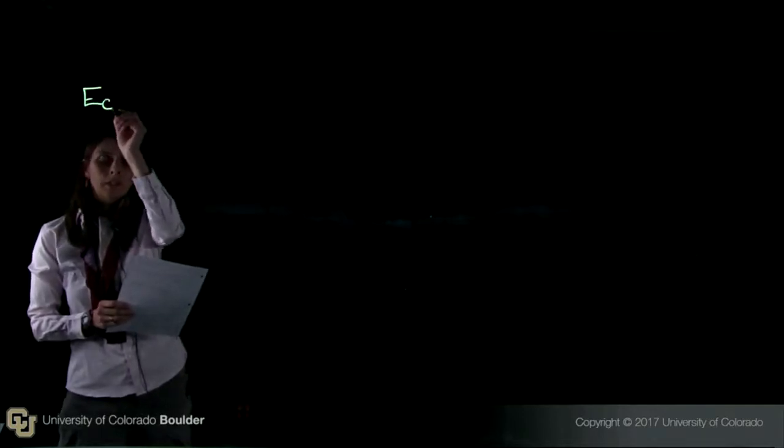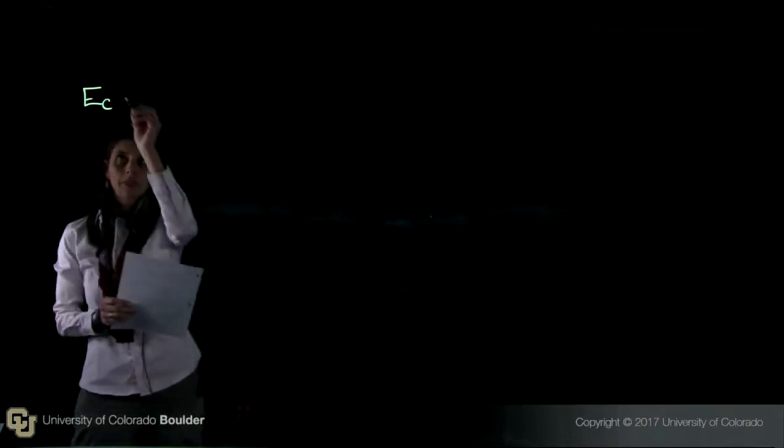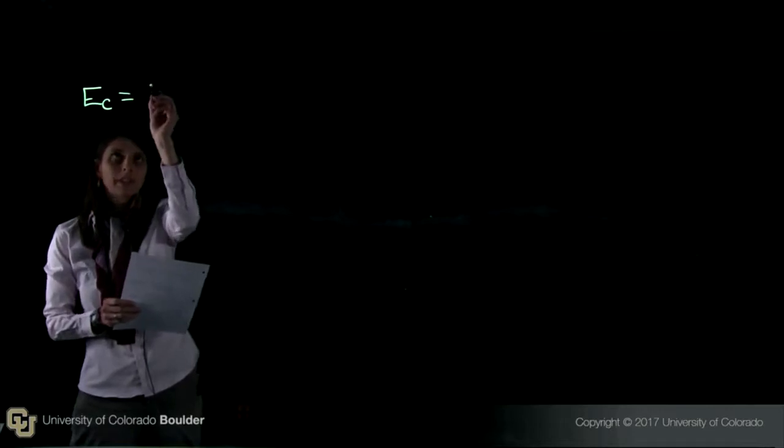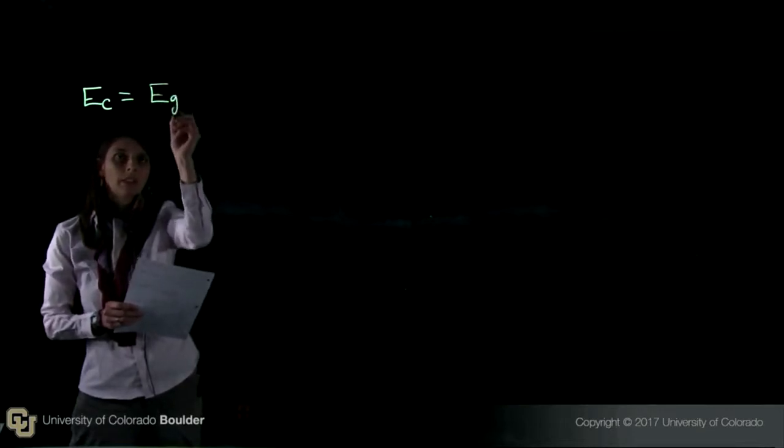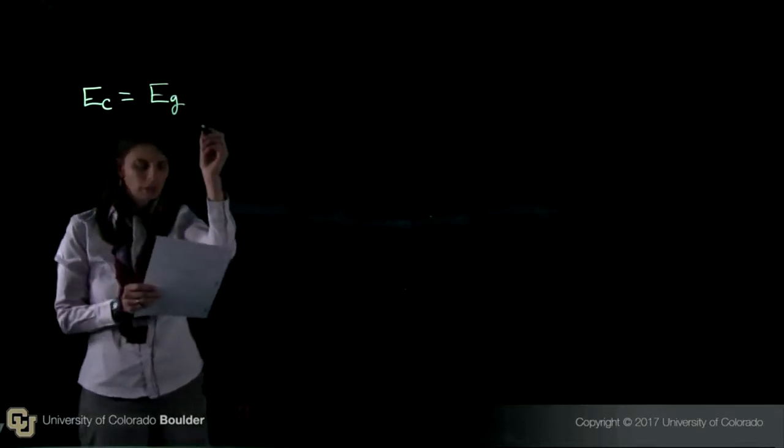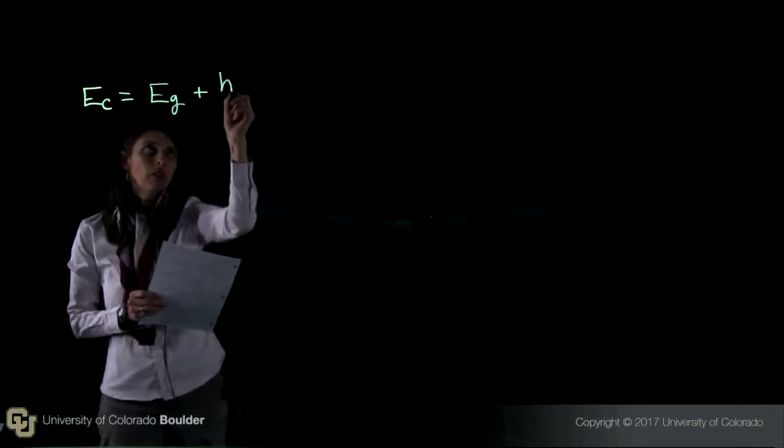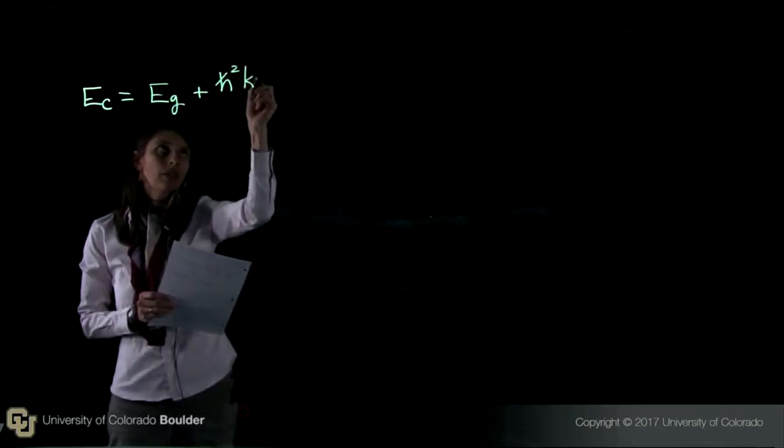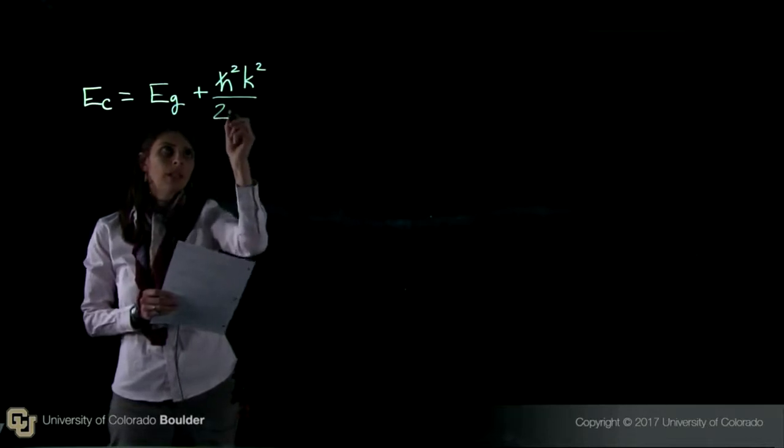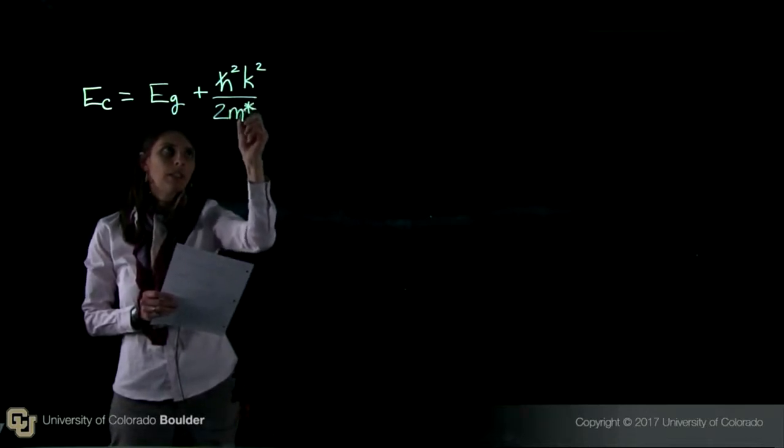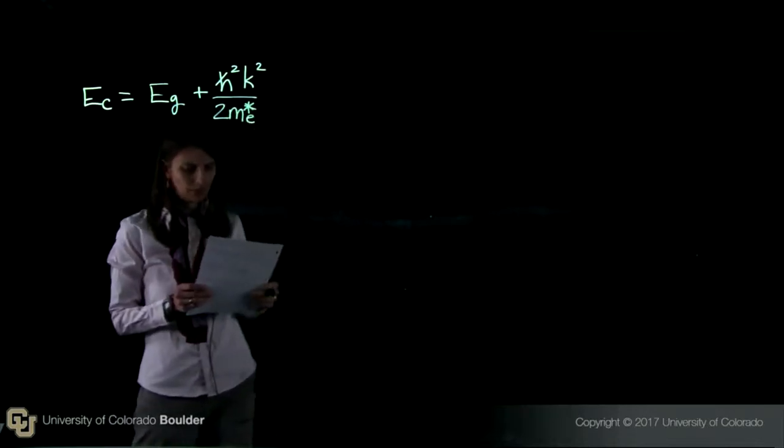So if I write down an expression for the conduction band, assuming parabolic bands, I would write E_C equals E_g plus h-bar squared k squared over 2m star e, where this is the mass of an electron.